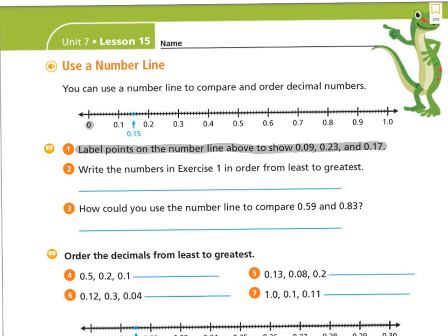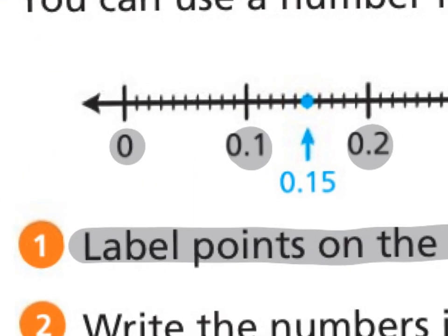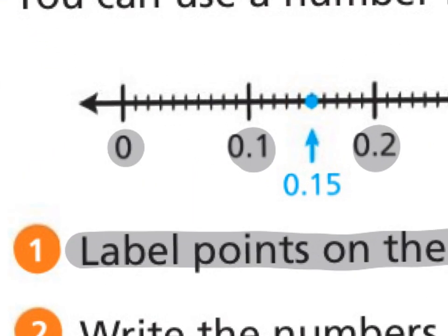It looks like the number line is split into tenths: one tenth, two tenths, three tenths, four tenths, five tenths, six tenths, seven tenths, eight tenths, nine tenths, and then all the way up to one whole. Between my zero and one tenth, it's split down even further into hundredths. So if this right here is my dime, then each one of these little tick marks is my penny.